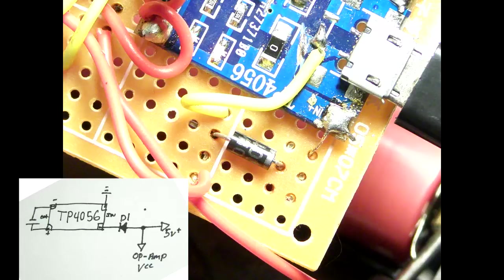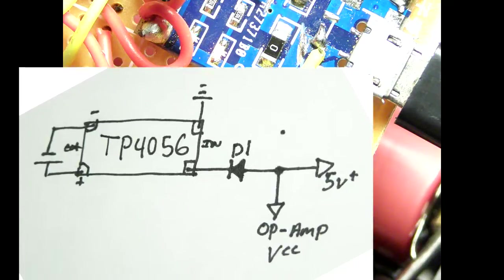The difference in supply voltage of the op-amp compared to the TP4056 VCC will be equal to that of the voltage drop across the diode used.